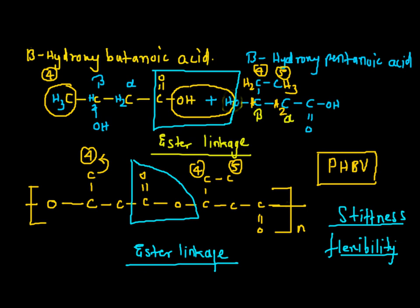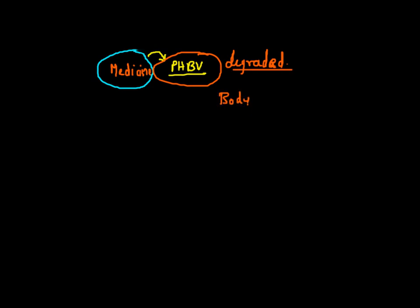This polymer PHBV is also used for controlled drug release. That is a medicine placed in the PHBV polymer. Suppose this is the polymer PHBV and medicine is placed inside. This medicine is released the moment the PHBV polymer, that is this coating, gets degraded. It is degraded in the body and medicine is released.